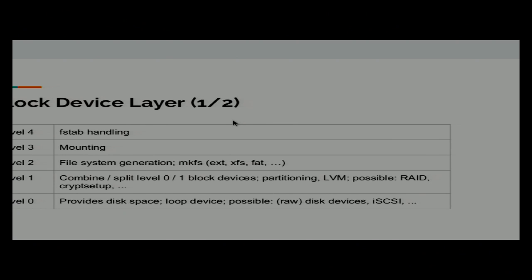Now I want to talk about the block device layer, which is an important point. There are a lot of things you have to put directly into the operating system — for example, you can add a package later with a configuration management system, but you won't want to play around with your partition table or LVM later on. That has to be done first, directly during the image build. About a year ago, the block device layer allowed exactly one image with one partition, and that was all.